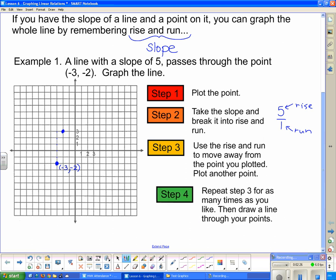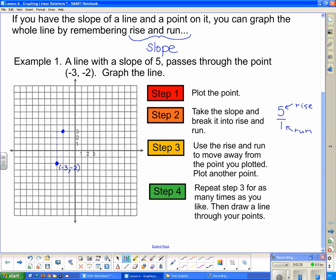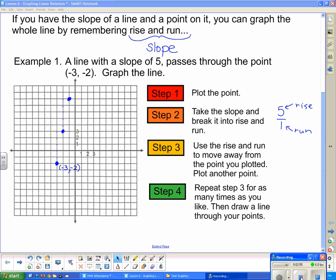Step four says repeat step three for as many times as you like, then draw a line through your points. OK, so I'm going to go from this point that I just plotted. I'm going to go up one, two, three, four, five and forward one. So I've got to rise five, run one. And I think that's all I really want to do because I'm out of space. So now it says then draw a line through the points. So I'll draw my line. And there it is. Looks like a nice line too. And that's it. That's all there is to it.